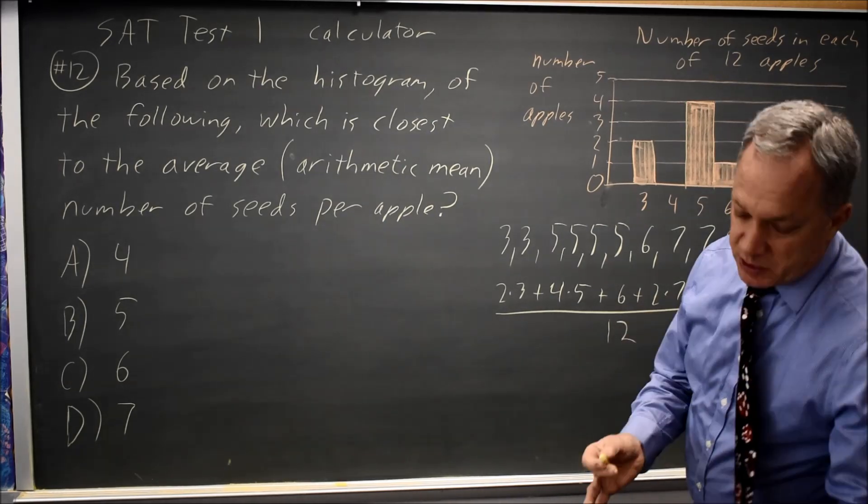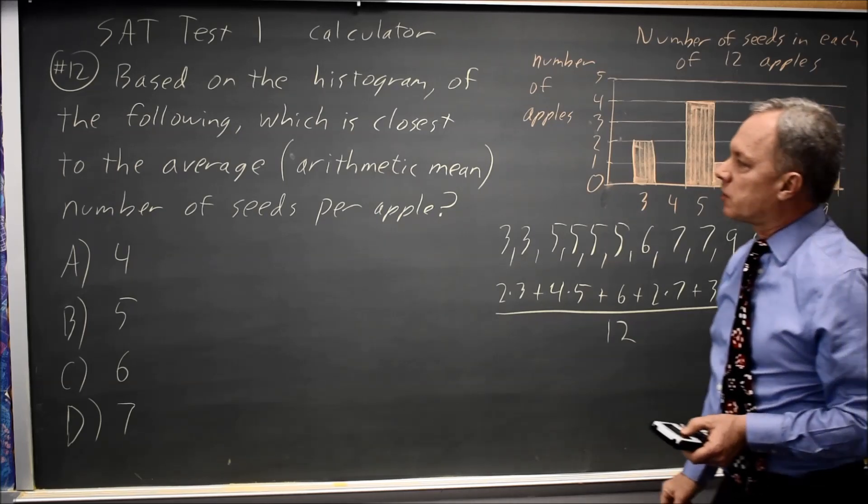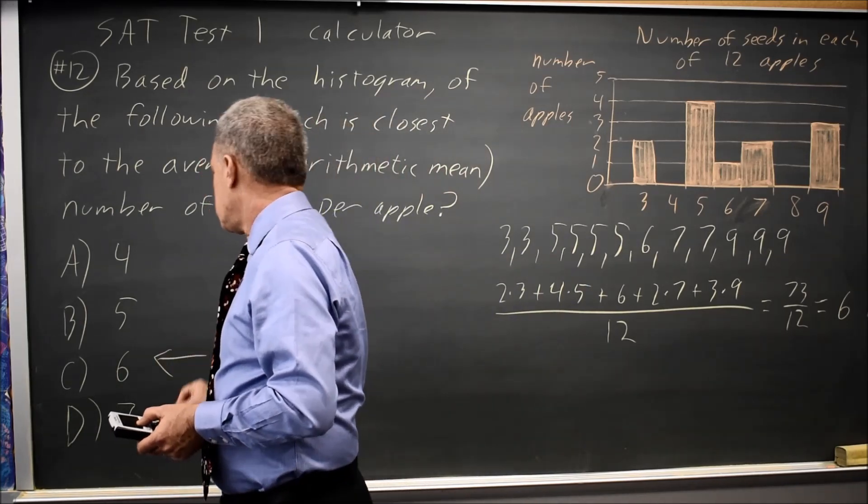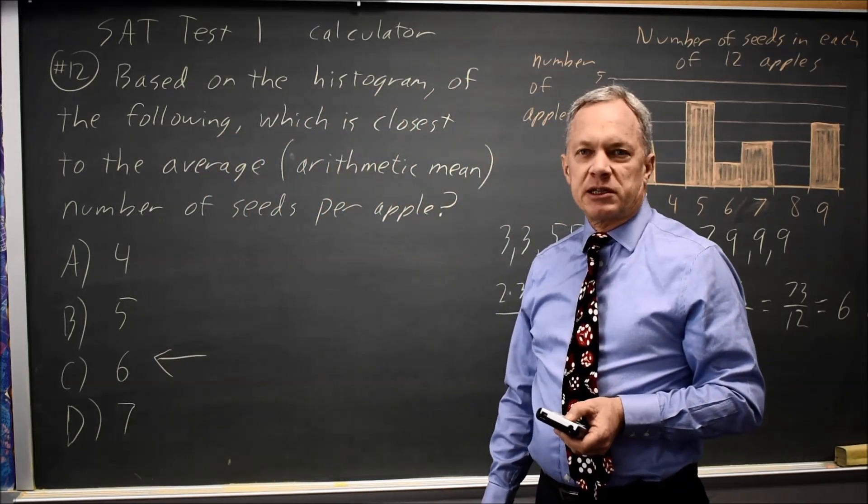And if I check my calculator, that is 73 over 12, which is just a little over 6. And their question, what's the average number of seeds? The closest number would be 6, choice C.